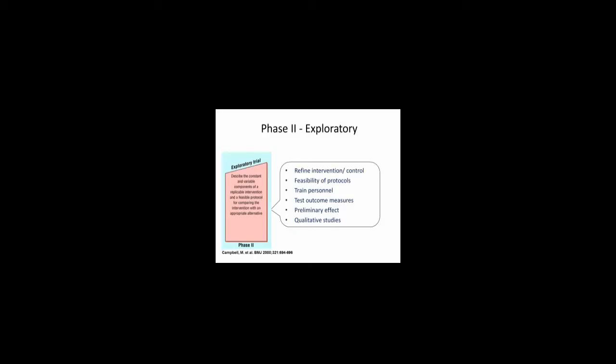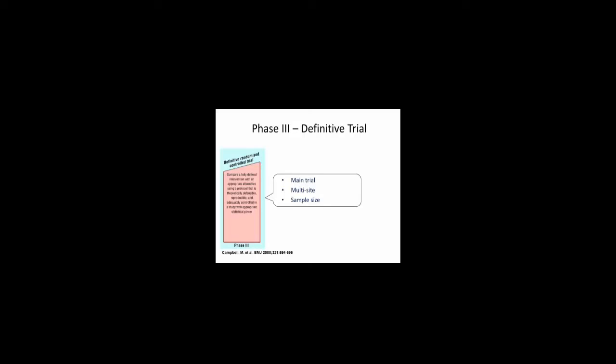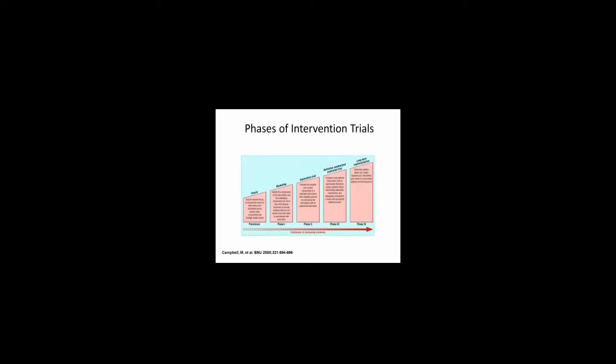With all of this information, once you have done various pilot studies within these phases, you wind up with the main trial — the definitive randomized control trial — designed to compare a well-defined intervention with well-defined controls using very well set up protocols. This creates a defensible, reproducible study. Often it is a multi-site trial with appropriate sample size to get statistical power. Of these phases of intervention trials, the first three are really pilot studies.